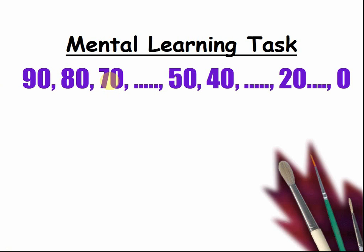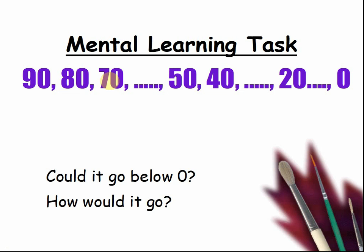Ninety, eighty, seventy, something, fifty, forty, something, twenty, something, zero. Pause the video. What are the missing numbers? Could this sequence go below zero? How would it go after zero? Pause the video and tell your teacher.